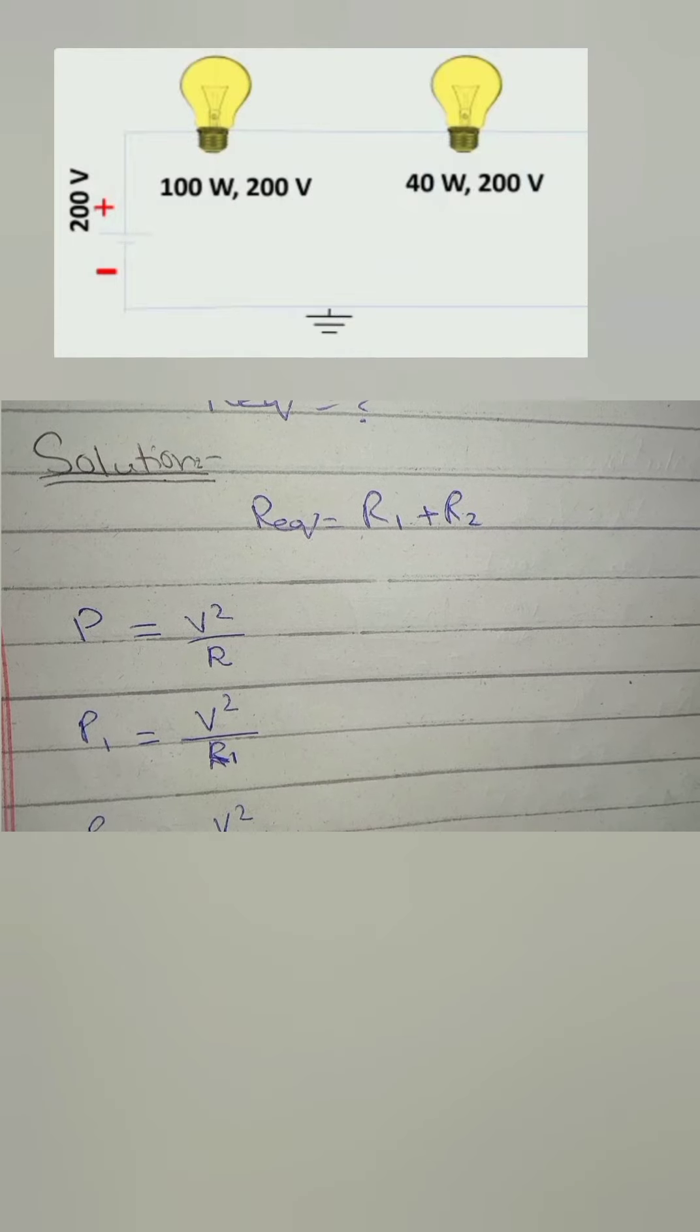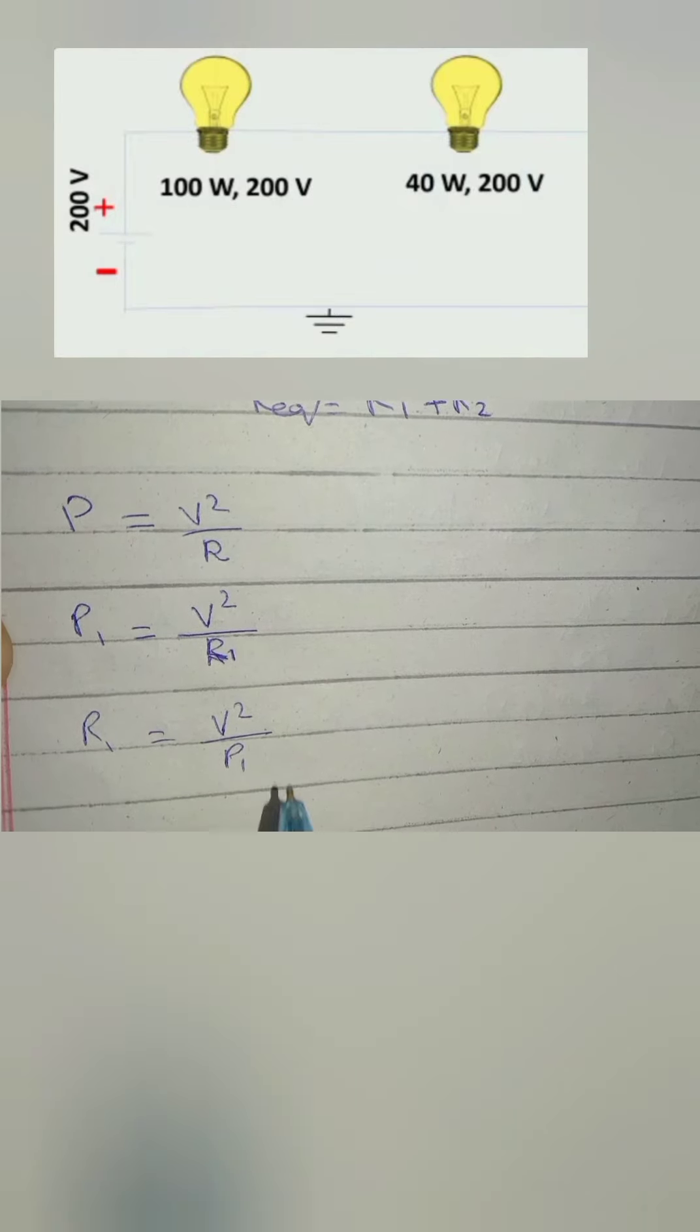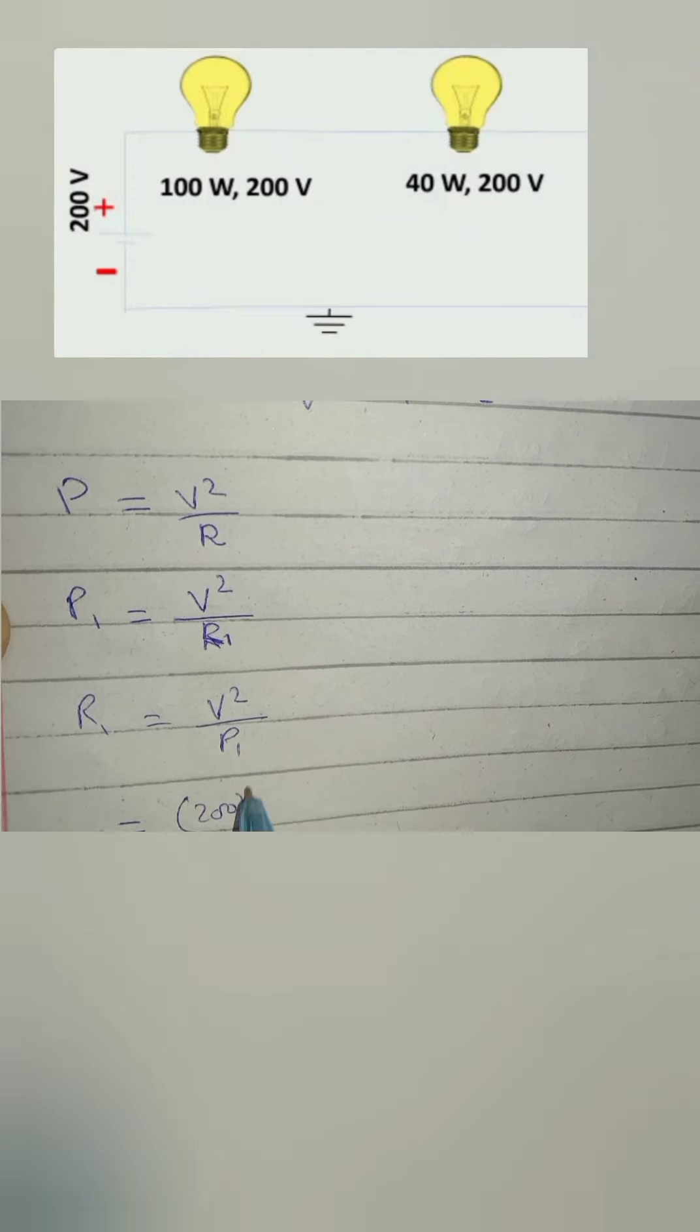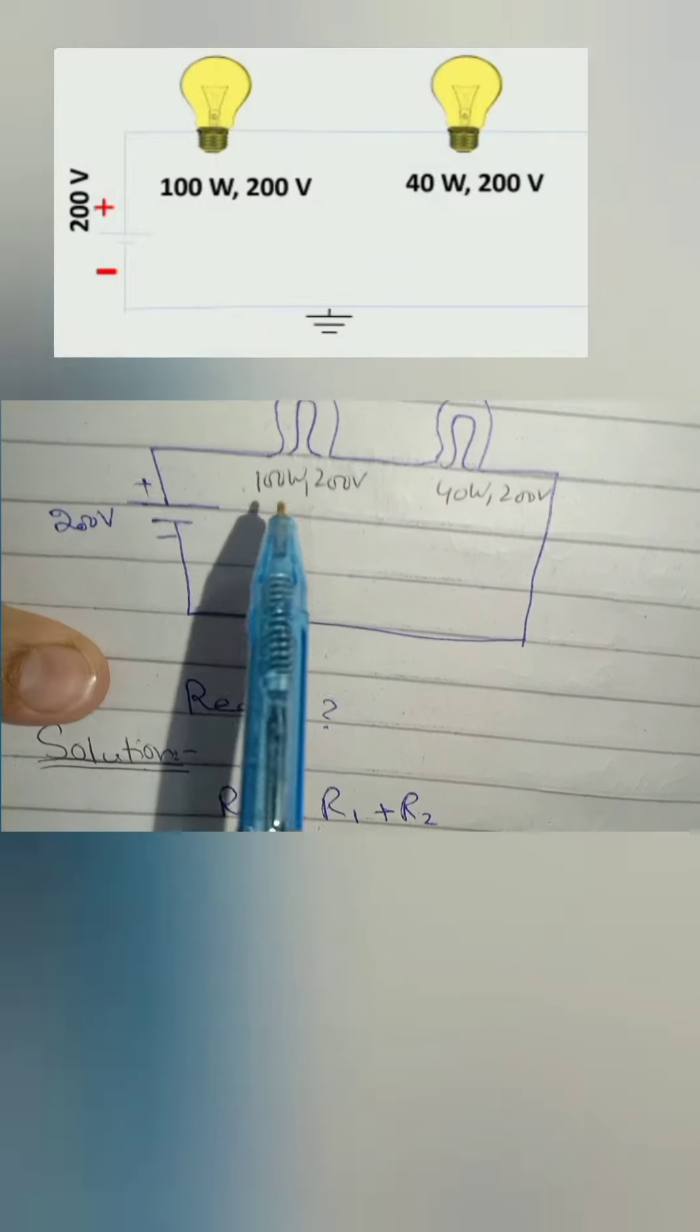We obtain V square over P1. Put the values of voltage and power. Voltage is 200 volts and P1 is 100 watts.